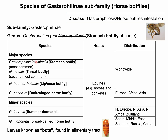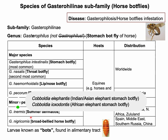The major species are Gastrophilus intestinalis, Gastrophilus nasalis, Gastrophilus haemorrhoidalis, and Gastrophilus pecorum. The first three species are distributed worldwide, but the most common species is Gastrophilus intestinalis. Minor species that infest equines are also listed. Note that the stomach bot fly of Indian or Asian elephants is Cobboldia elephantis, and the African elephant stomach bot fly is Cobboldia exodontis.